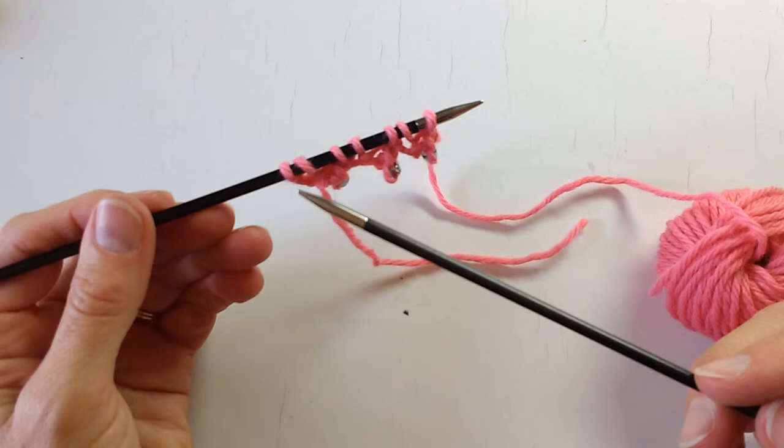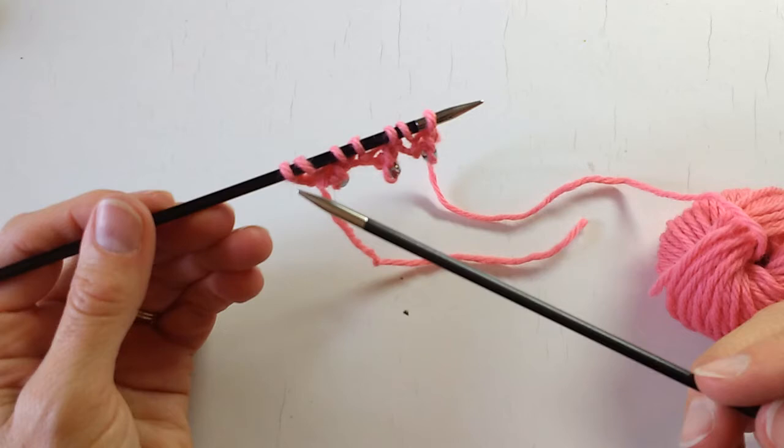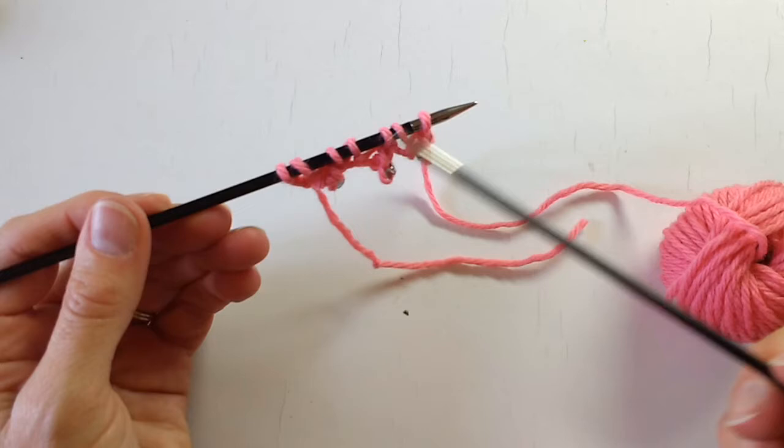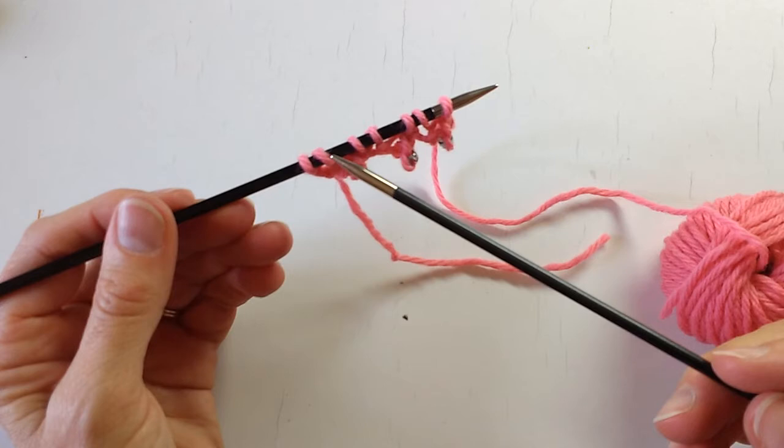So now you can start to see what's happening here. We had three and then five, and now we have seven stitches on the needle. So we're increasing by two every time we do this. And you can see they're kind of grouping by twos. So the first two stitches are together, the next two are together, the next two are together.